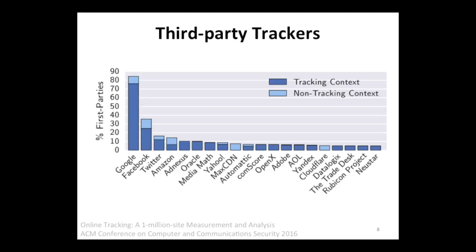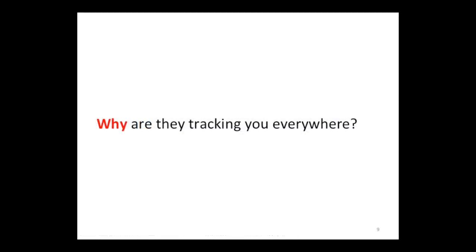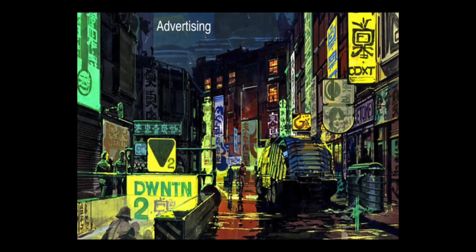Now that you understand this tracking is happening and is pervasive — as soon as you open your web browser and type a name of a website, you are being tracked — let's figure out why. This is what I call surveillance capitalism. Most of these companies make money off of advertising. You don't have to pay to use Gmail, you don't have to pay to use Facebook. They make money off of you by showing you advertisements. The advertising seems very simple — you see an ad, you click, you buy something. But let's look a little deeper to figure out what's really going on.